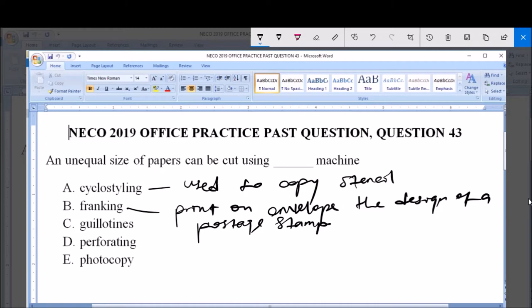Now Gillotines machine. Gillotines machine is a paper cutting machine designed with a rectangular base fitted with sharp blade.